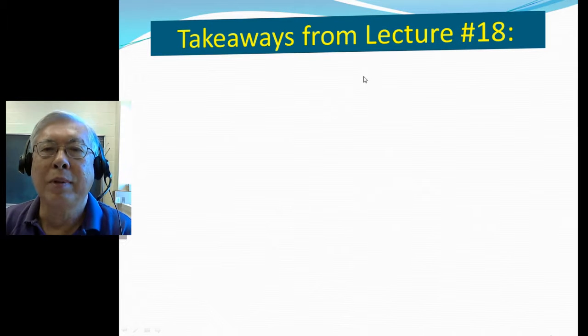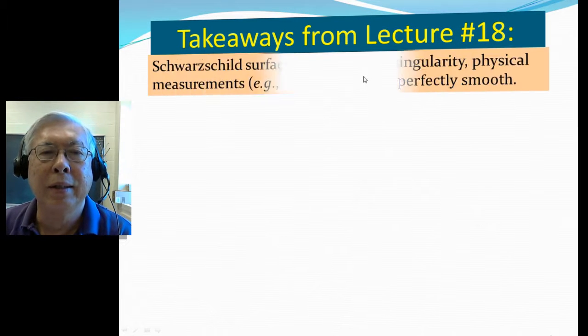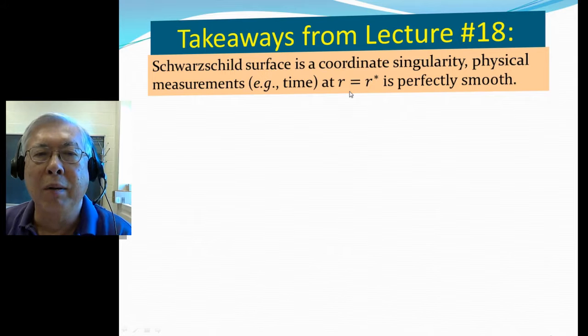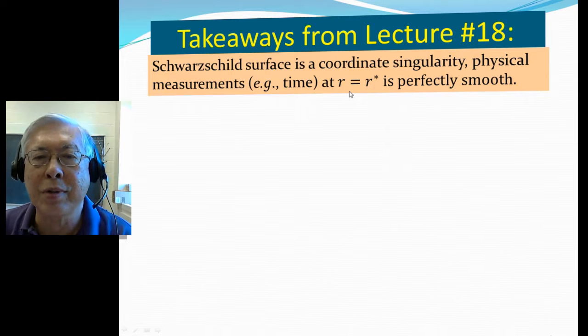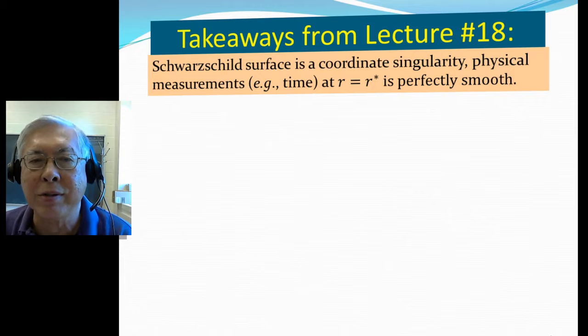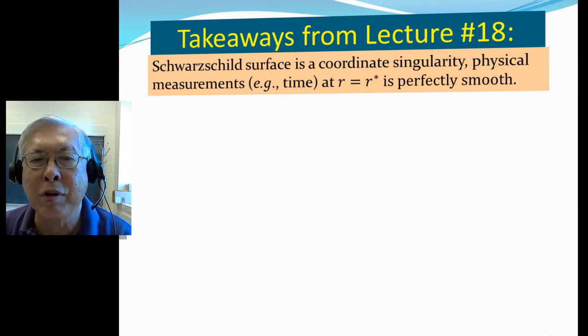So here's the takeaway from this lecture number 18. We first said the Schwarzschild surface is a coordinate singularity. It's not a physical singularity, because you make physical variation, for example, measure time across the Schwarzschild surface is perfectly smooth. It doesn't blow up.